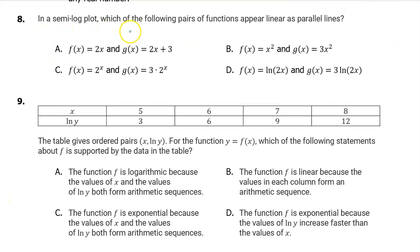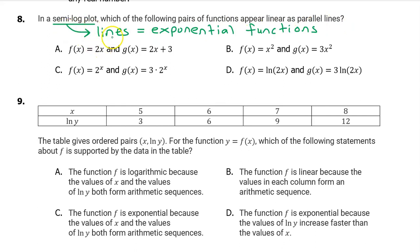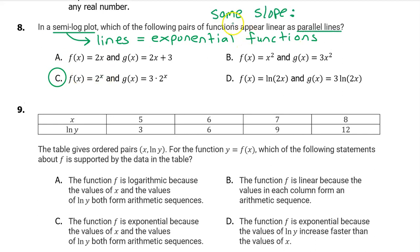Example 8: In a semi-log plot, which of the following pairs of functions appear as parallel lines? On a semi-log plot, lines are actually exponential functions, so we are looking for a pair of exponential functions — that's only option c. Parallel lines have the same slope, and the slope of a semi-log line is the log of the b value. In option c, the b value for both functions is 2, so both lines would have a slope of log 2.